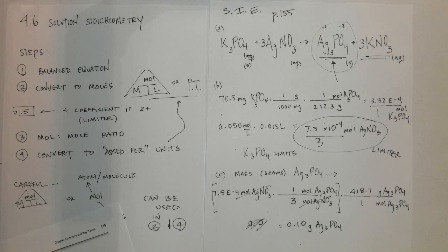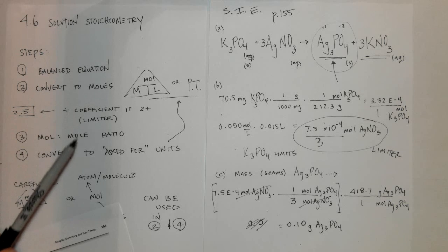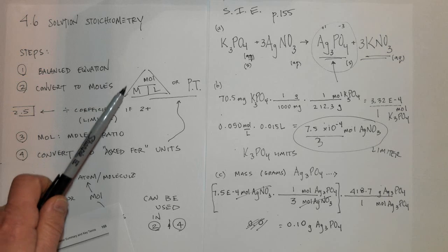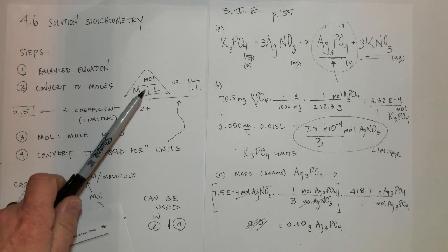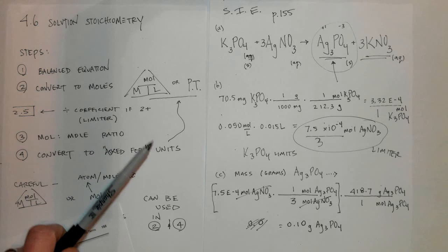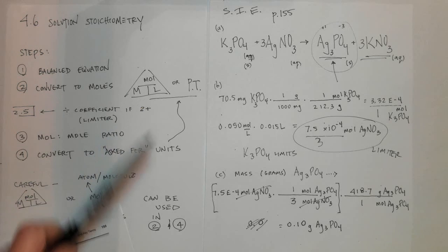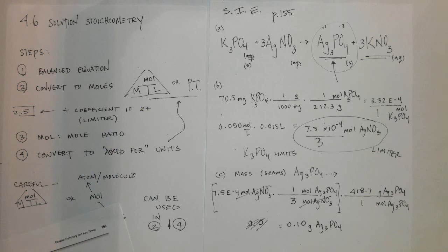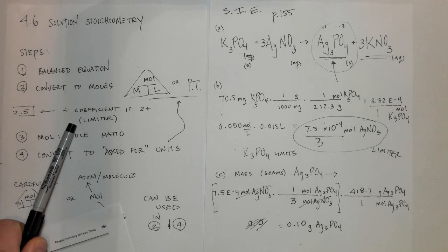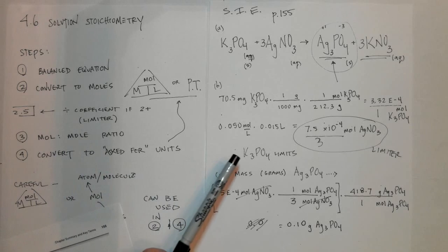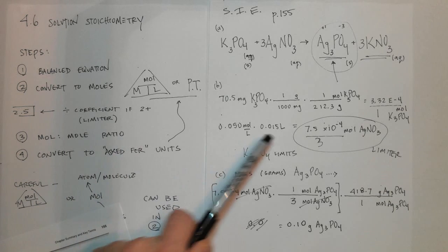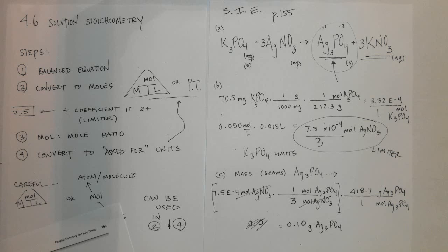In this videocast we reviewed the steps to stoichiometry, and you should have learned that the molarity triangle can be used either to convert to the asked-for units at the end or to convert to moles at the beginning. We also reviewed how to determine the limiting reagent — divide by the coefficient and determine which one is going to be the smallest. Good luck on your solution stoichiometry problems.